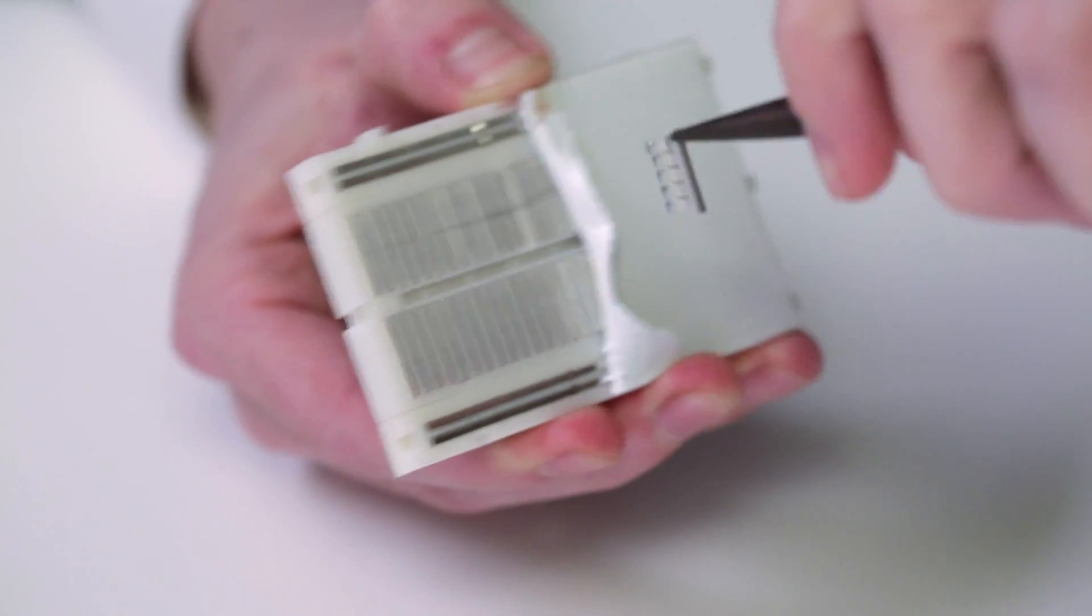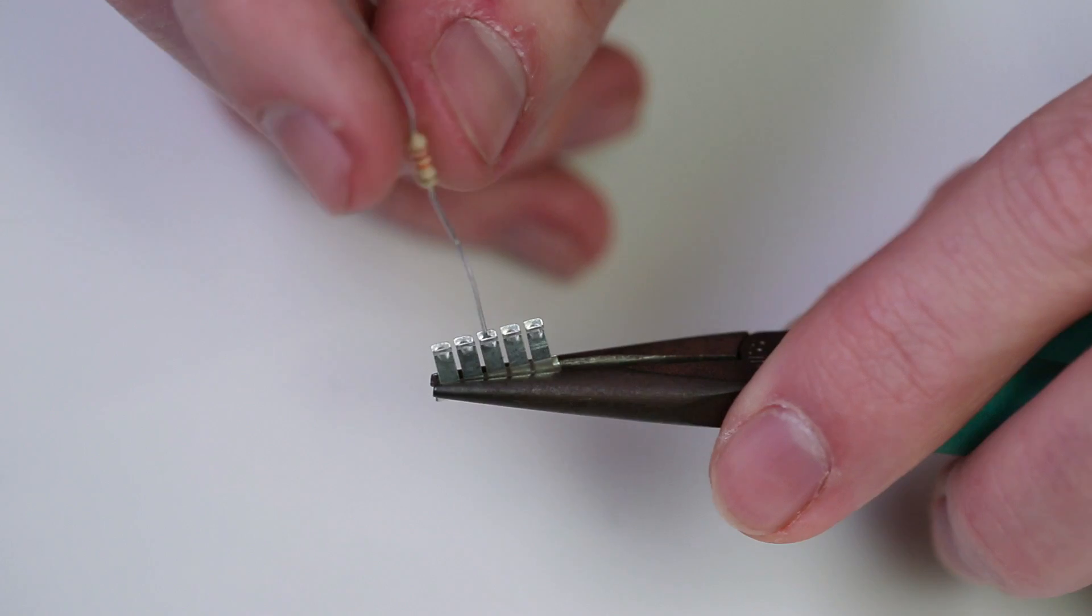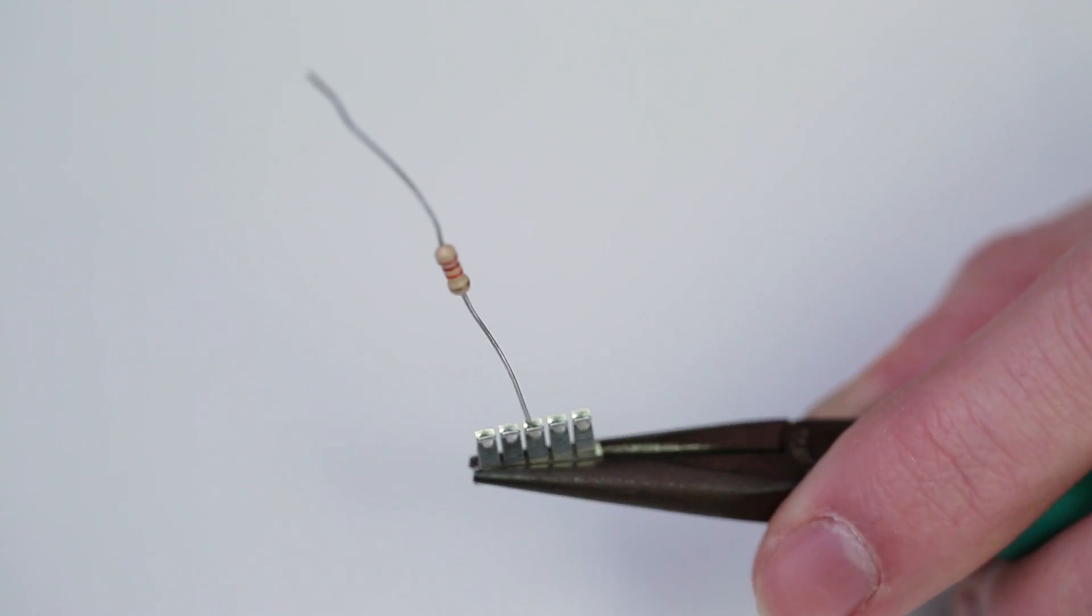Beneath all those holes, a breadboard houses an army of springy metal clips which hold component leads in place while providing electrical connections between them. Though you may want to avoid taking one apart.